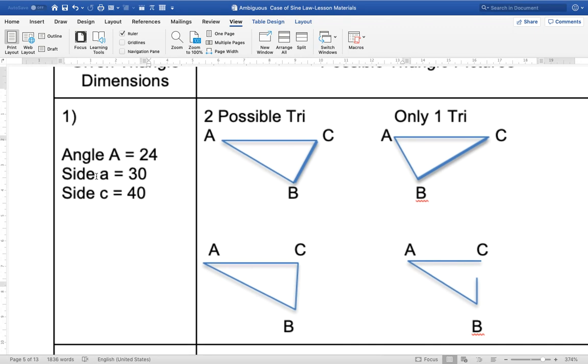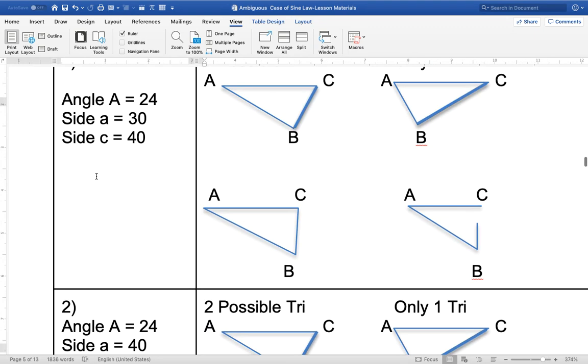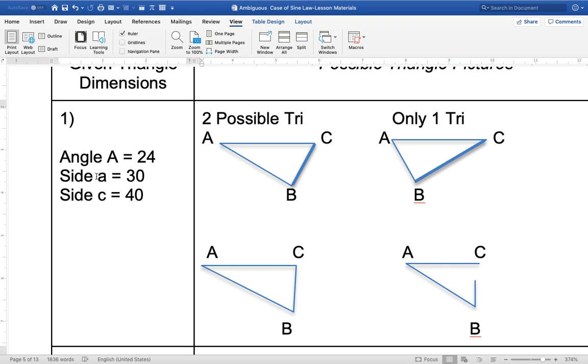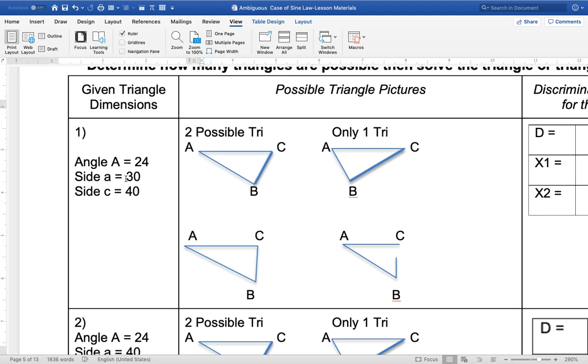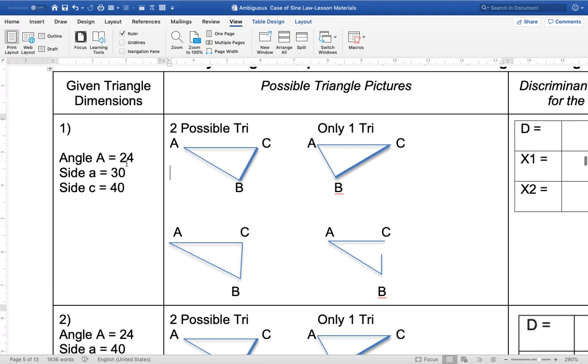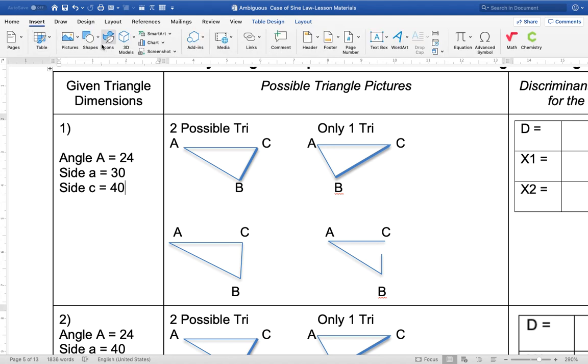So we're going to look at four different triangles, all with different combinations of opposite side angle pairs, and then a second side in the triangle. So I'll just give you a picture, a possibility here. The first triangle that we're going to look at has one angle of 24 degrees. The side opposite to that angle, so it's angle A, the side opposite to that is 30, and then side C is 40. So what we're going to do is take a look at which possible triangles would this be.